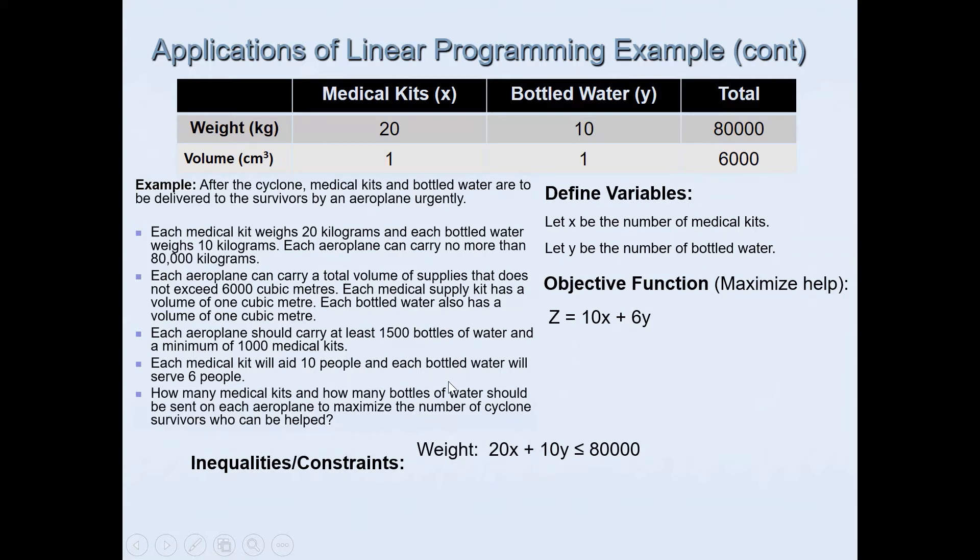For the weight, we had the restrictions there. So 20X, 20 kilograms is the weight for medical kit, plus 10Y is less than or equal to 80,000, which was the maximum weight for the airplane. And then we had the volume, the total should not exceed 6,000 cubic meters. So X plus Y is less than or equal to 6,000. We were also told that the aeroplane should carry at least 1,500 bottles of water and minimum of 1,000 medical kits. So X is greater than or equal to 1,000. Y is greater than or equal to 1,500.